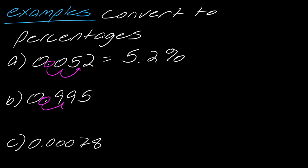For B, I'm going to move this over 2. So this is 99.5%. And then for C, I'll move this 1, 2 spots over. So this is going to be equal to 0.078%. It's always two spots. You might still end up having a decimal as your percent. That's totally okay.